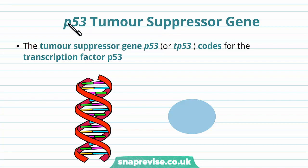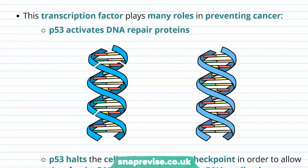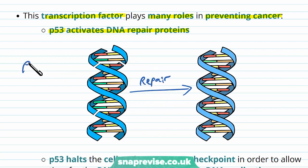A good example of a tumour suppressor gene is the p53 gene, also known as TP53. It codes for the transcription factor called p53 — so the gene itself codes for a protein which is a transcription factor. The p53 transcription factor plays lots of roles in preventing cancer. It helps activate DNA repair proteins, and can trigger the repair process to help DNA get rid of mutations.